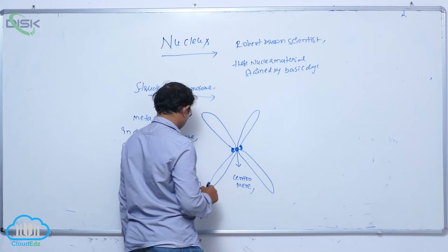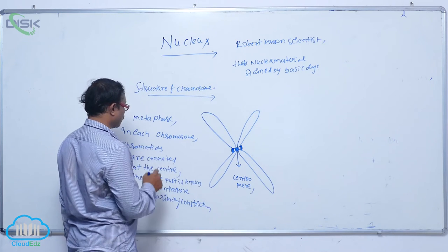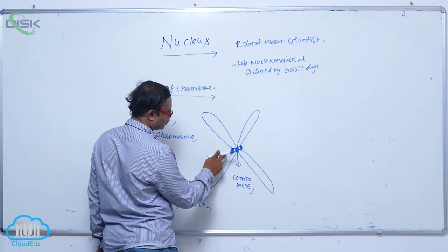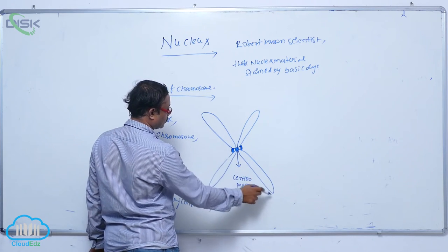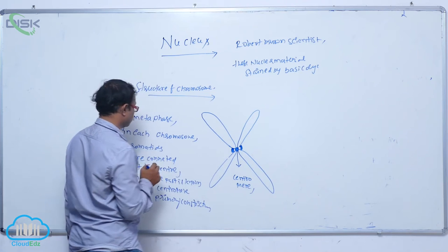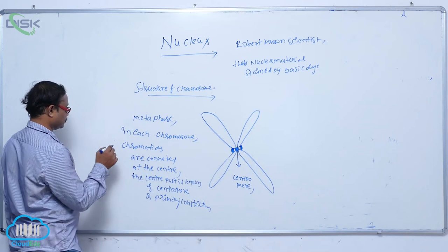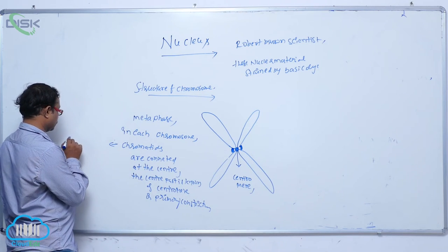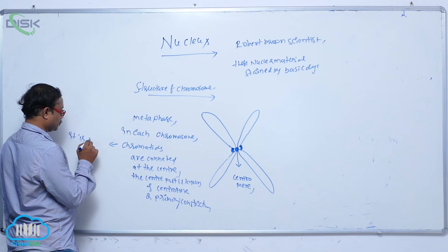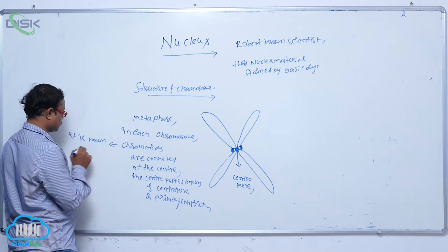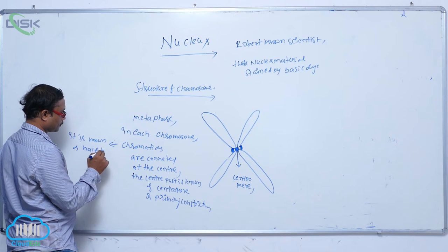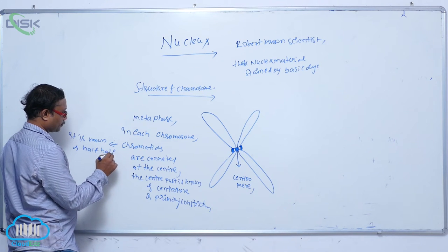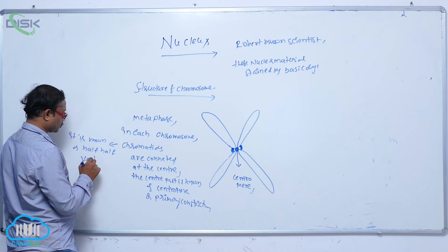A chromatid is half of the vertical part of a chromosome. Each of the two longitudinal halves of a chromosome is known as a chromatid.